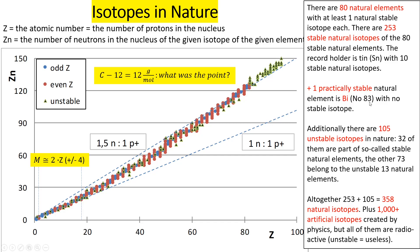How does the mathematics give 83 when I mentioned 81? Because element number 43 — technetium — is radioactive and has no stable isotopes, and element number 61 — promethium — also has no stable isotopes. So 83 minus 2 gives 81 stable or practically stable elements.